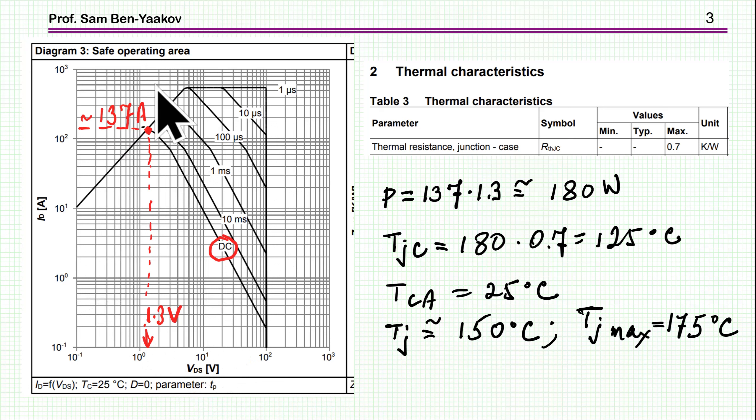This line is actually related to the RDS on. If you have a current of say 20 amp, then the voltage will be this voltage due to the relationship between voltage and current due to RDS on when the transistor is on. This has nothing to do with the limits.